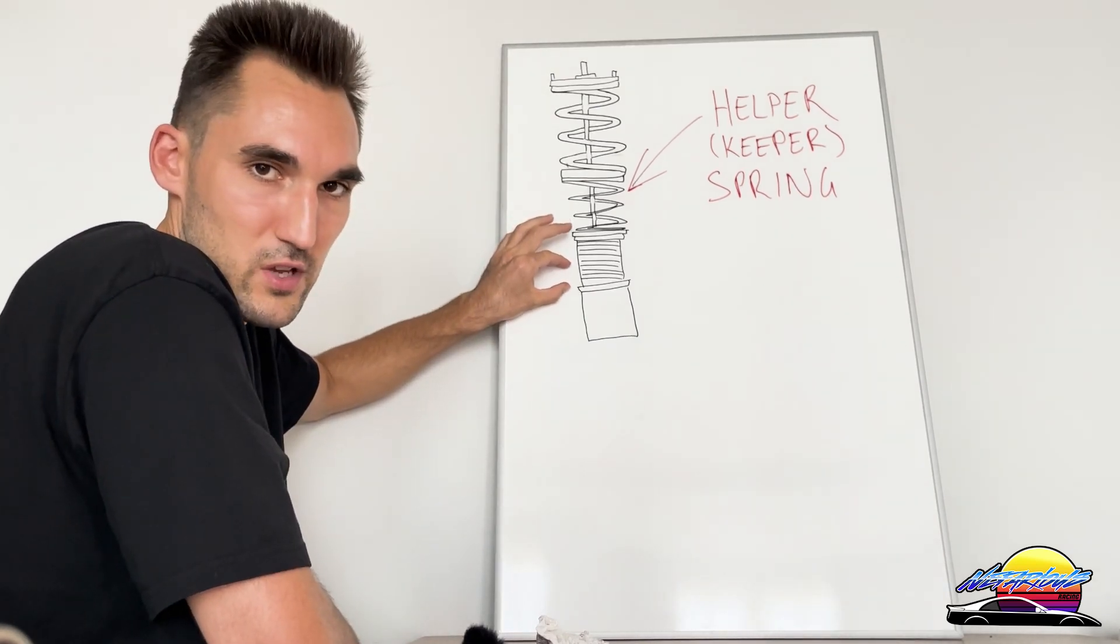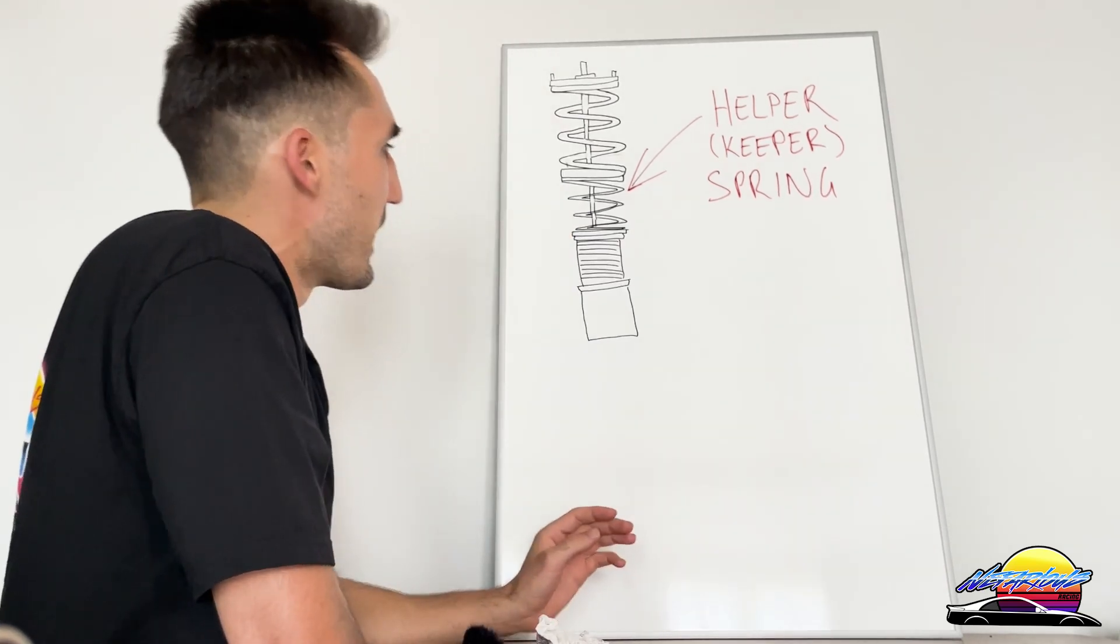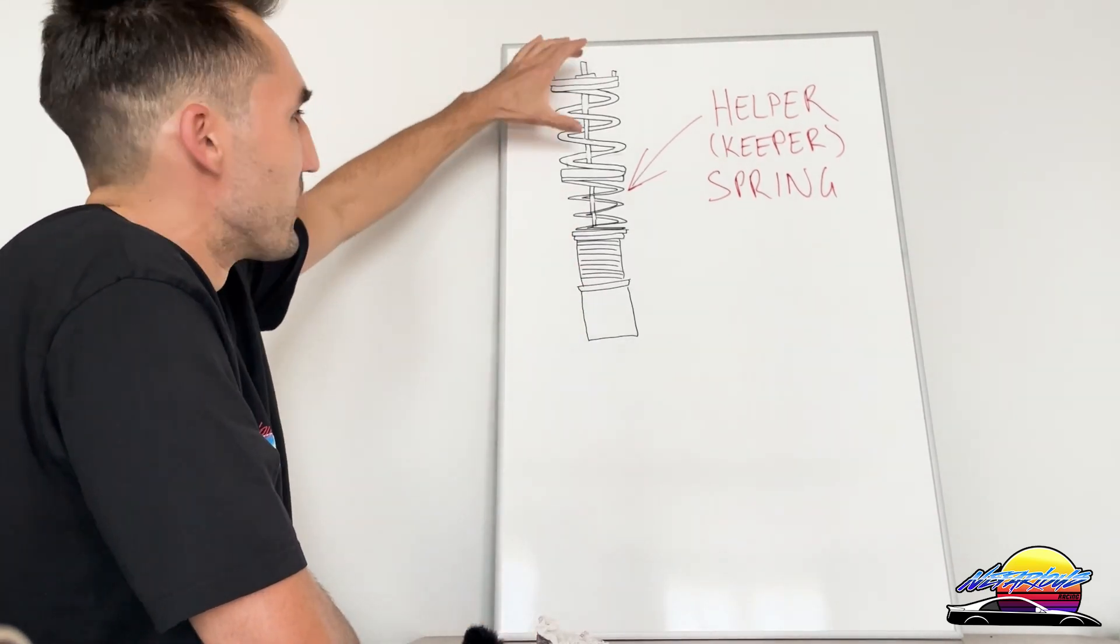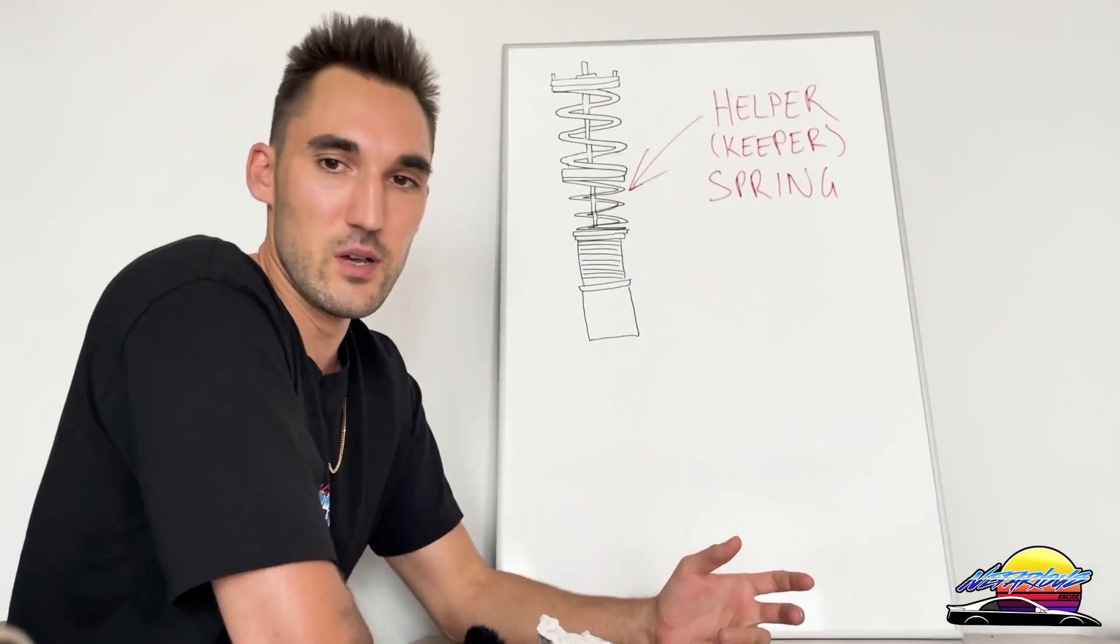If you take the helper spring out, the whole thing goes lower. The problem with that is at full extension, nothing's holding that top spring and then it might rattle around and fall off. So it's not really the best way to do it, but that's why some people remove them.